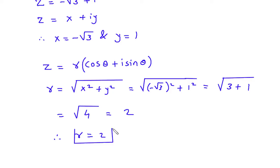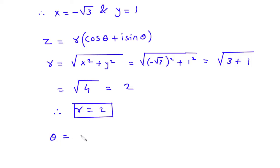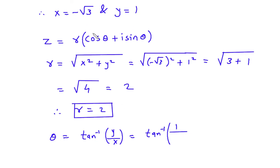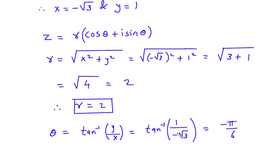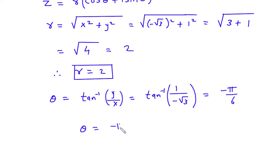Next we have to find the value of theta. To find theta, the formula is theta is equal to tan inverse of Y by X. So this will be tan inverse of Y is 1 and X is minus root 3. So this will be tan inverse of minus 1 by root 3, which is equal to minus pi by 6. So therefore theta is equal to minus pi by 6.